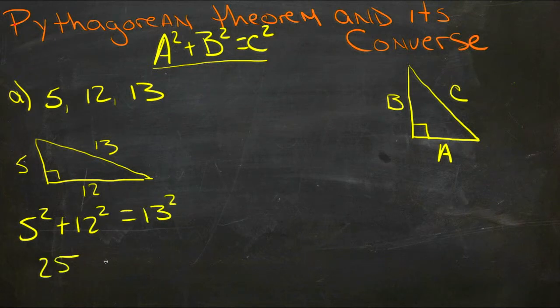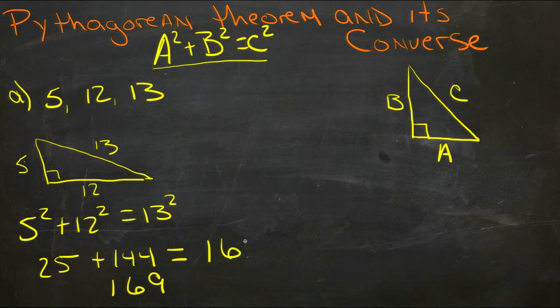Well, 5 squared is 25, and 12 squared is 144, and the question is, does that equal 13 squared? Well, 25 plus 144 is 169, and 169 is 13 squared.